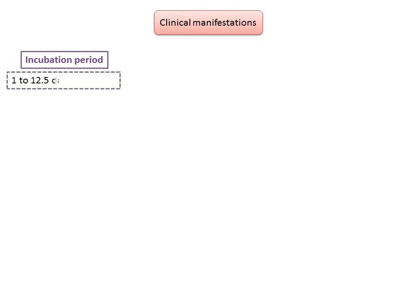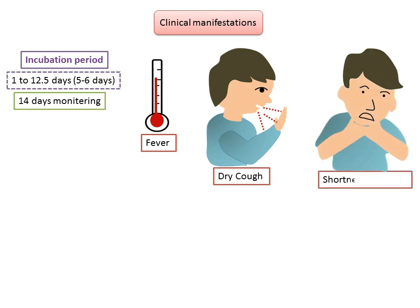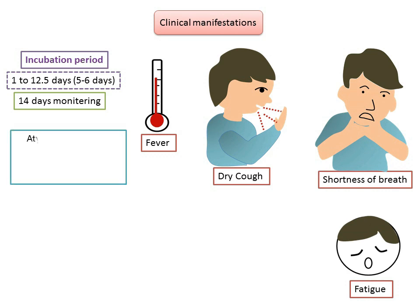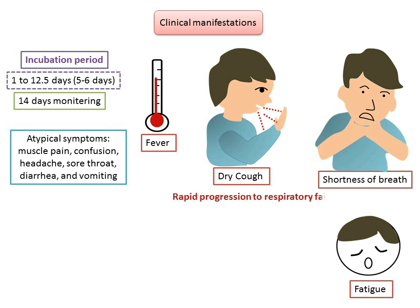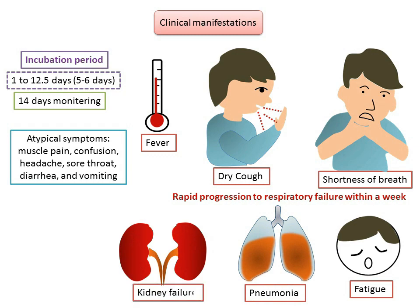What are the symptoms of COVID-19? The incubation period is 1 to 12.5 days, with an average of 5 to 6 days. The incubation period is the time between exposure to an infection and the appearance of first symptoms. Evidence indicates the incubation period could be as long as 14 days, which is now the commonly adopted duration for medical observation and quarantine of potentially exposed persons. The majority of patients experience fever and dry cough, with some also having shortness of breath, fatigue, and other atypical symptoms such as muscle pain, confusion, headaches, sore throat, diarrhea, and vomiting. There was rapid progression to pneumonia and consequently respiratory failure within a week, and in a few patients, kidney failure followed by death.